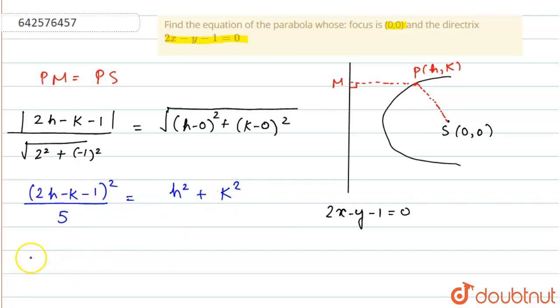Now, cross-multiplying this, we get 4h squared plus k squared plus 1 minus 4hk plus 2k minus 4h equals 5h squared plus 5k squared.